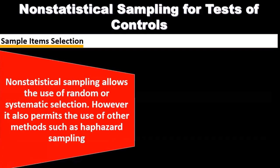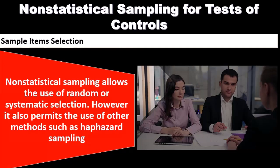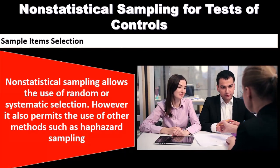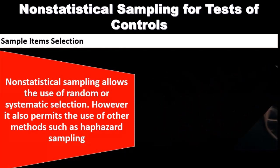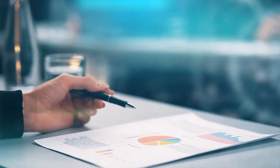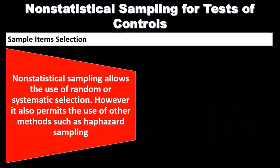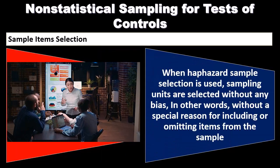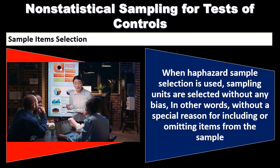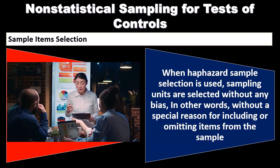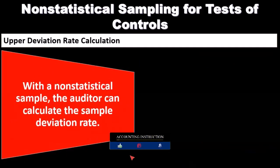For sample item selection — now that we have the sample size — how do we select those items? In our case, the purchasing documents: how do we pick which ones we're going to test? Non-statistical sampling allows the use of random or systematic selection. However, it also permits the use of other methods such as haphazard sampling. When haphazard sampling is used, sampling units are selected without any bias — that is, without a special reason for including or omitting items from the sample.